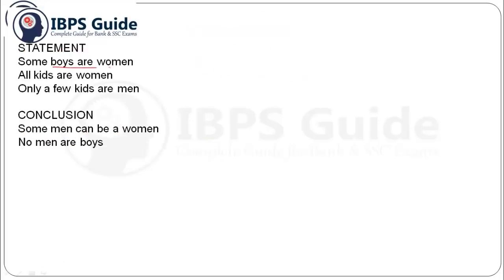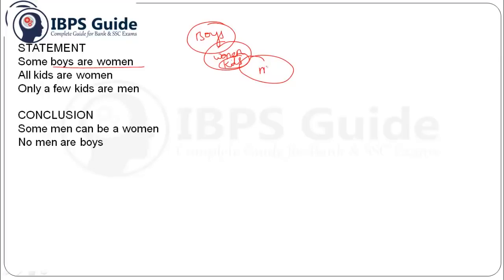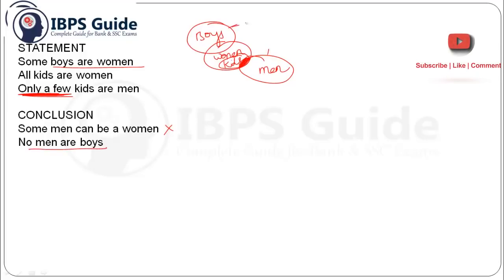Next question: 'Some boys are women', 'All kids are women', and 'Only few kids are men' — note that 'only' is included here. Conclusion one: 'Some men can be women is a possibility.' If we definitely know that this portion of men is shared with women, then how can the possibility case become true? So it is not true. Conclusion two: 'No men are boy.' Men and boys have no direct relationship and no definite answer can be drawn, so this also becomes wrong. Therefore both conclusions become wrong.